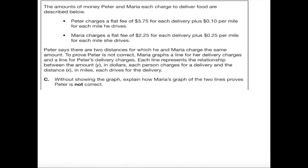The amounts of money Peter and Maria each charge to deliver food are described below. Peter charges a flat fee of $3.75 for each delivery plus $0.10 per mile. Maria charges $2.25 for each delivery plus $0.25 per mile. Peter says there are two distances for which he and Maria charge the same amount. To prove Peter's not correct, Maria graphs a line for her delivery charges and a line for Peter's delivery charges. Each line represents the relationship between the amount Y in dollars each person charges for a delivery and the distance X in miles each drives for the delivery. Without showing the graph, explain how Maria's graph of the two lines proves Peter's not correct. All right, that's a whole mouthful of information there. Kind of hard to unwrap it.